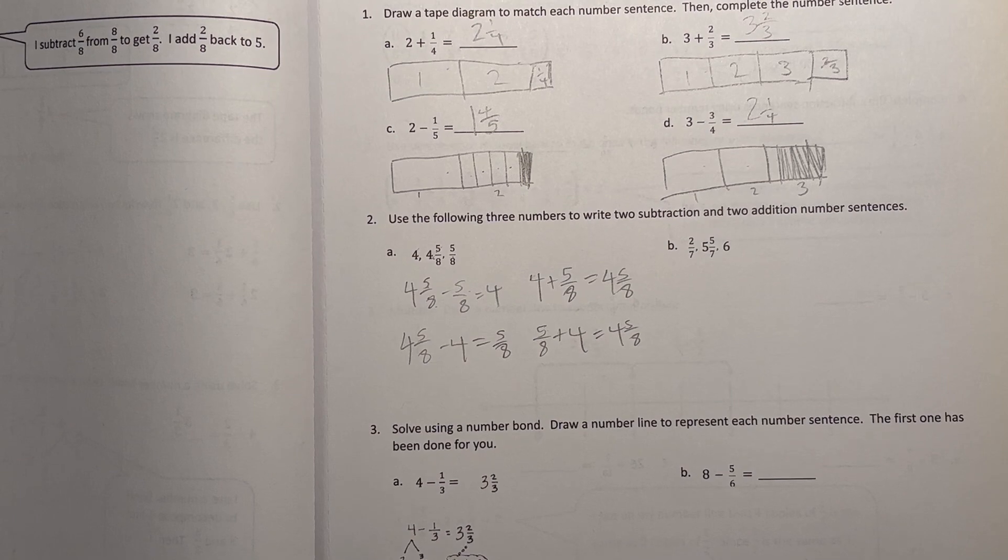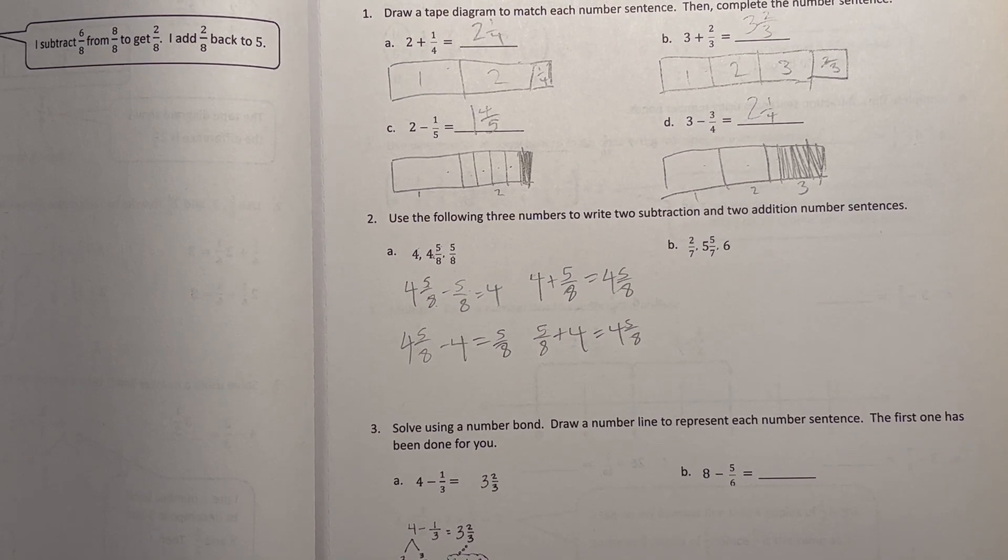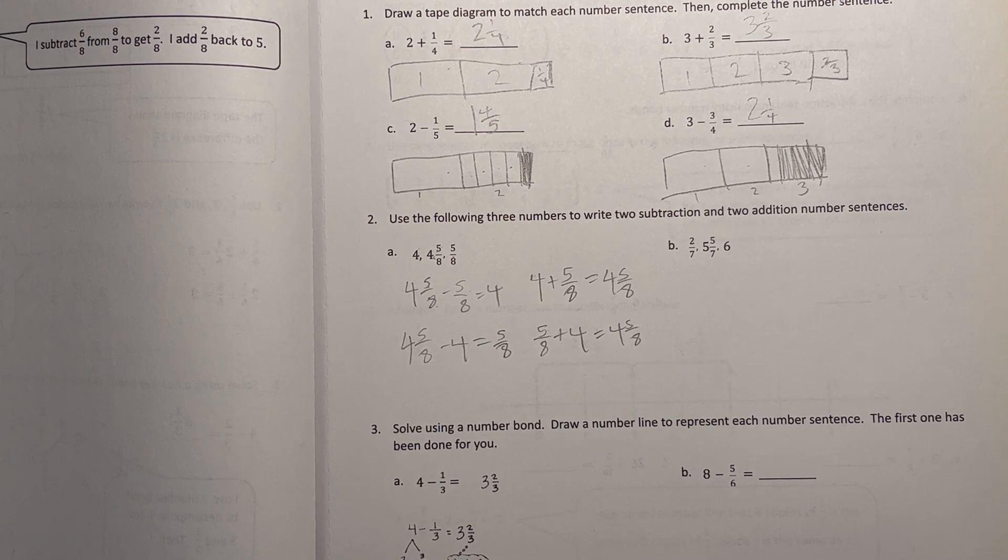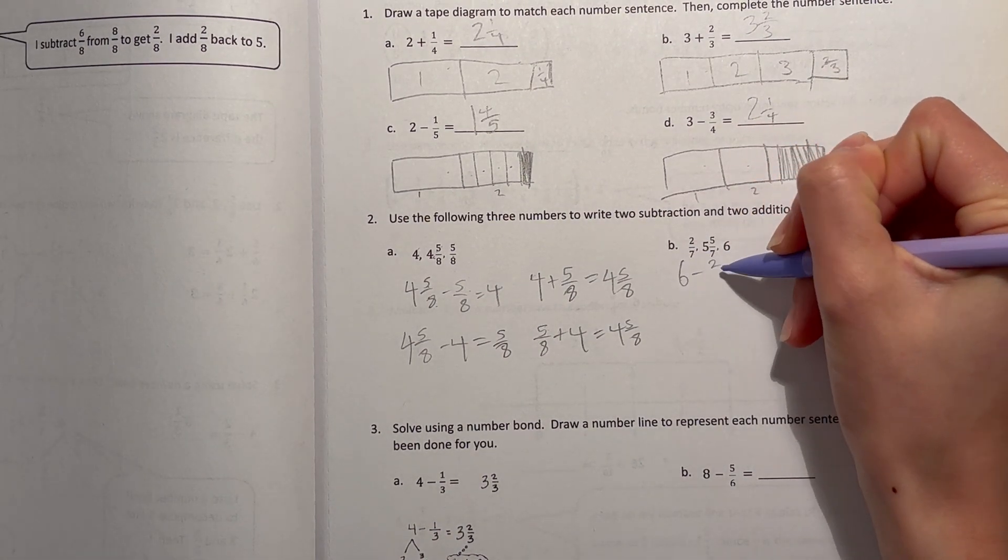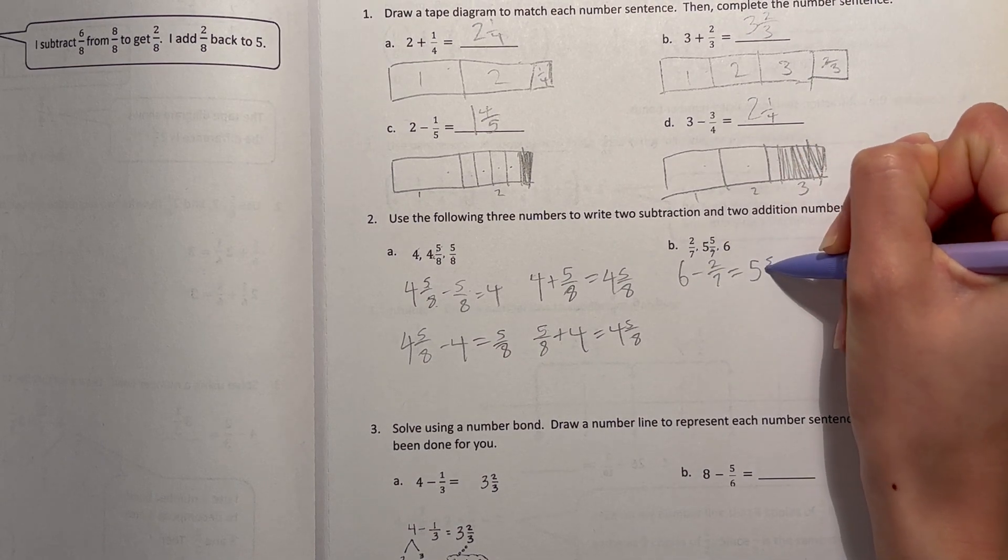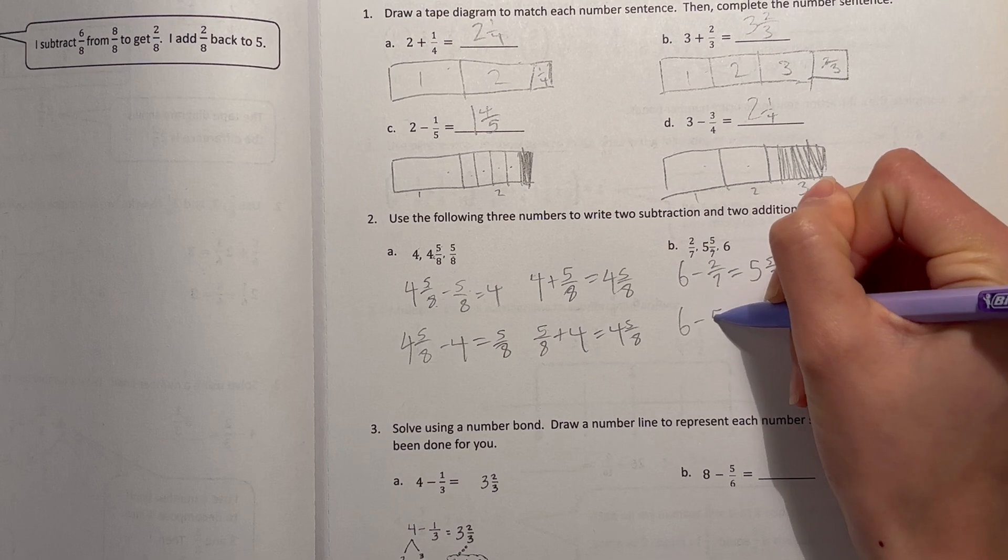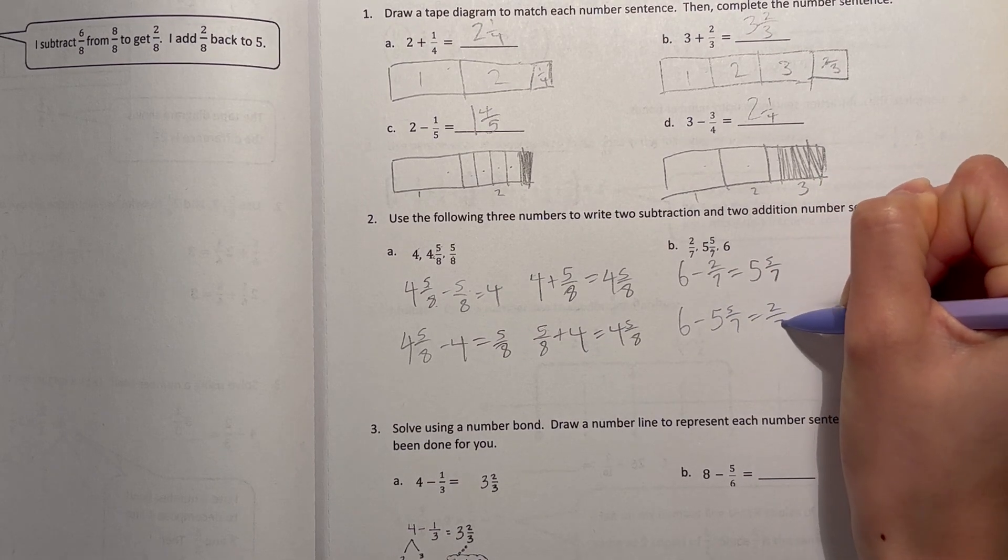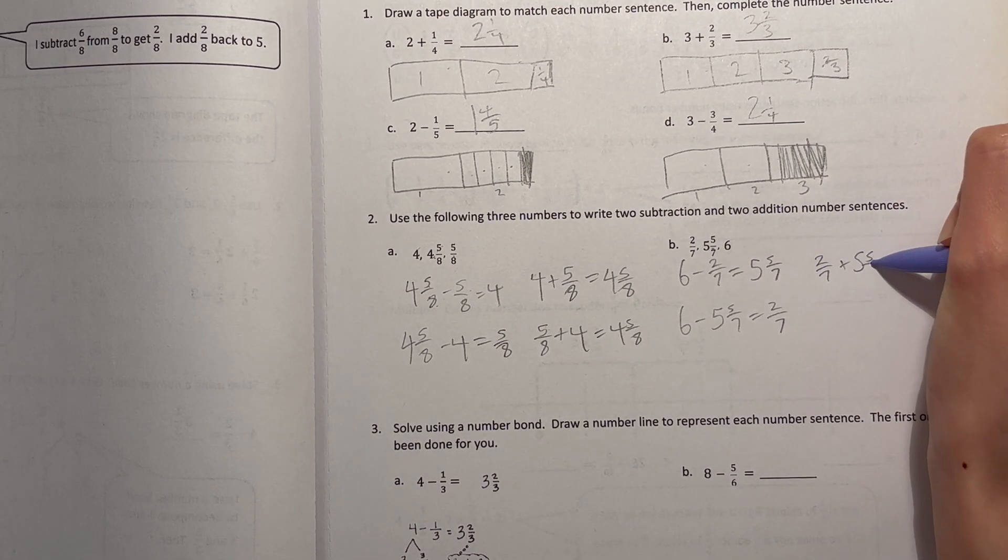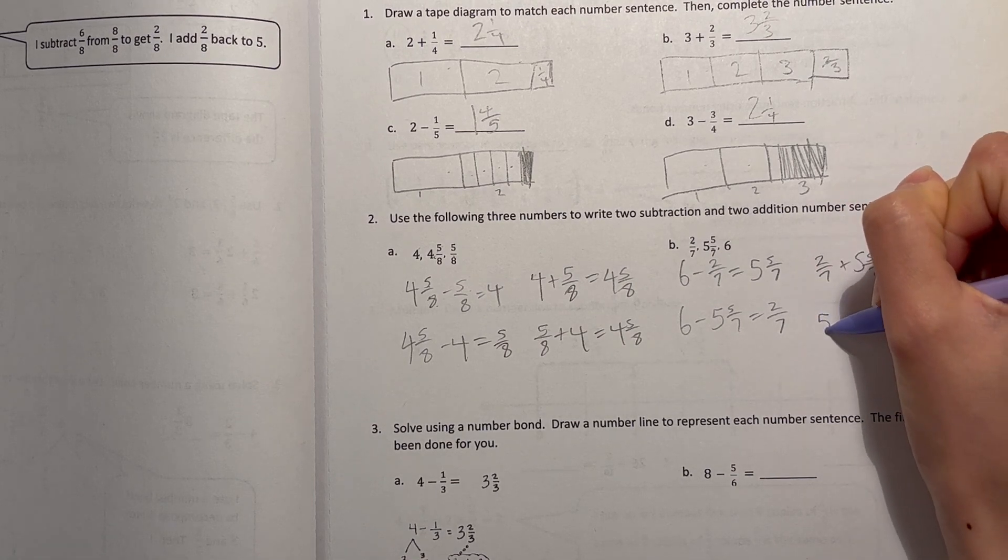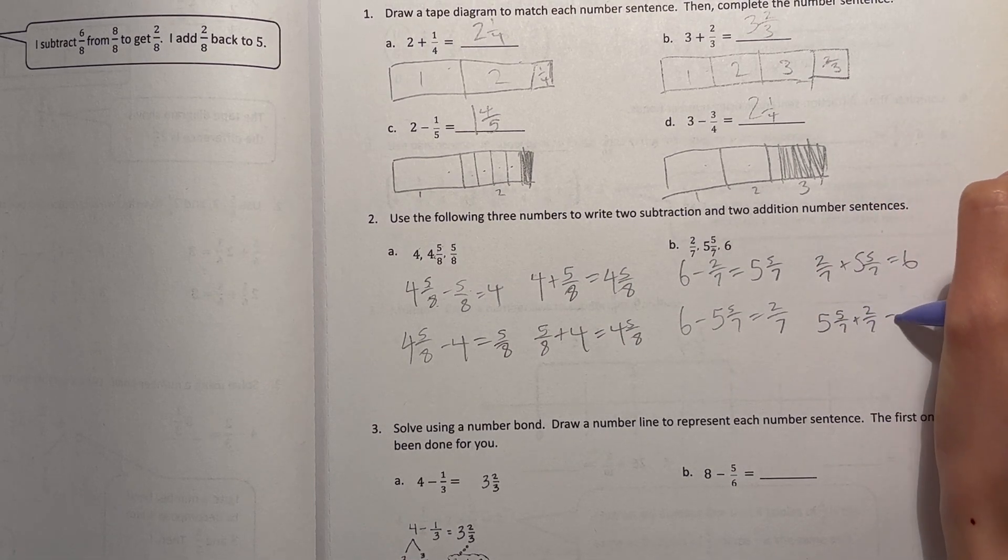All right, now B. I have 2 sevenths and 5 and 5 sevenths and a 6. So in this group, obviously our 6 is the biggest number, which means for subtraction, we're going to start with 6 minus 2 sevenths, so that will be 5 and 5 sevenths. And 6 minus 5 and 5 sevenths would be 2 sevenths. Now for addition, 2 sevenths plus 5 and 5 sevenths is 6. And 5 and 5 sevenths plus 2 sevenths is also 6.